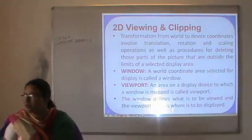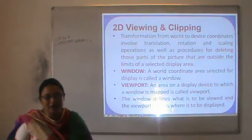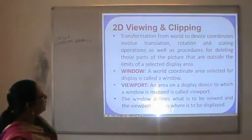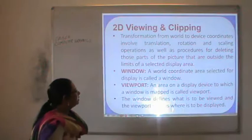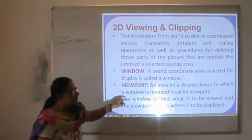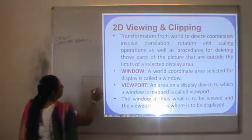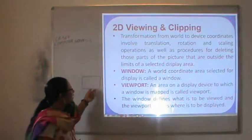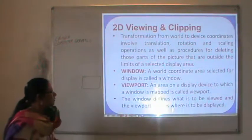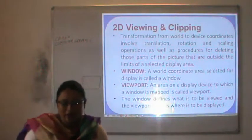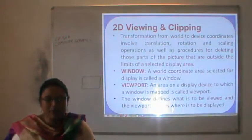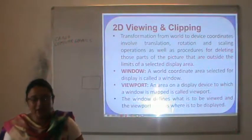Transformation from world to device coordinates involves translation, rotation, and scaling operations, as well as procedures for deleting those parts of the picture that are outside the limit of a selected display. A world coordinate area selected for display is called a window. An area of a display device to which a window is mapped is called a viewport. The window defines what is to be viewed and the viewport defines where it is to be displayed.